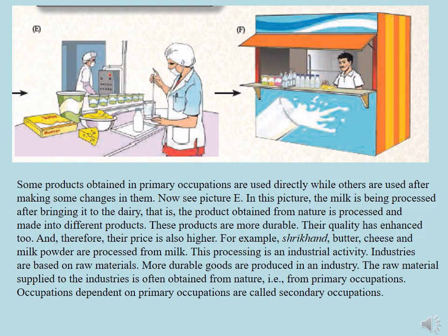Some products obtained in primary occupations are used directly while others are used after making some changes in them. In picture E, the milk is being processed after bringing it to the dairy — that is, the product obtained from nature is processed and made into different products. These products are more durable and their quality has enhanced too.